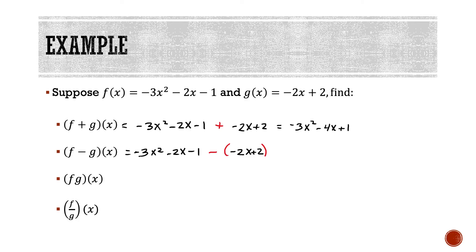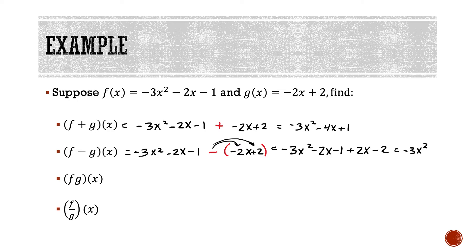Now we simplify. I leave the first function as it is: -3x² - 2x - 1, no changes. Then I distribute the negative through the parentheses on the second function. A negative times -2x gives +2x, and a negative times +2 gives -2. Combining like terms: I have -3x², the -2x and +2x cancel each other out, and -1 and -2 makes -3.